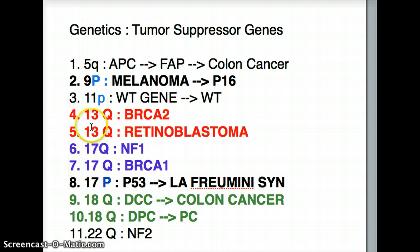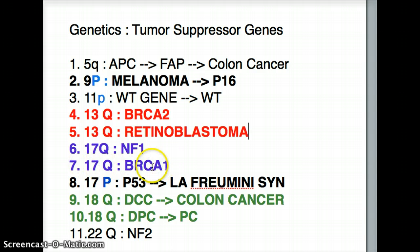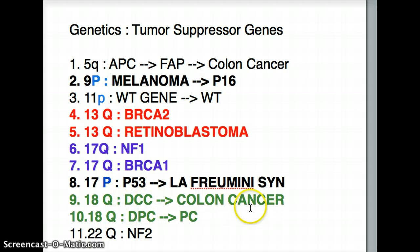Last but not least is 22Q, which is associated with NF2. To review the pairs: 13Q has two associations — BRCA2 and retinoblastoma. 17Q has two associations — NF1 and BRCA1. And 17P is P53 causing Li-Fraumeni syndrome, which is separate from the 17Q group. 18Q has DCC causing colon cancer and DPC causing pancreatic cancer. And 22Q causes NF2.